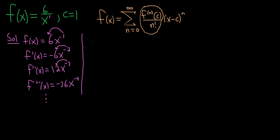So c here is equal to 1, so I'm going to go ahead and do that over here on the side. Let's plug in 1. So we have f of 1, that's 6 times 1 to the negative 1, so that's just 6. And f prime of 1 is negative 6. f double prime of 1 is 12. And f triple prime of 1 is negative 36.